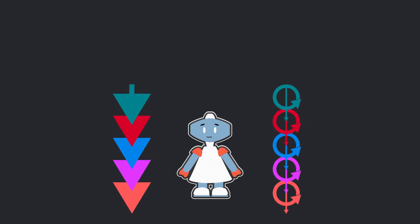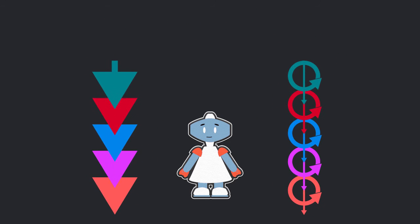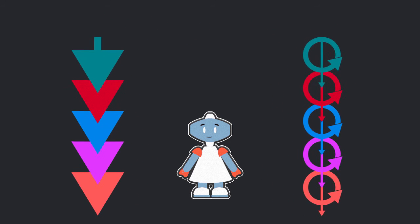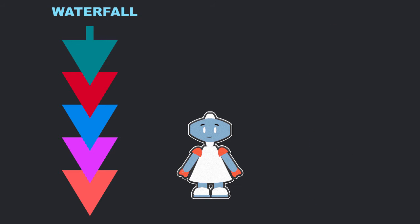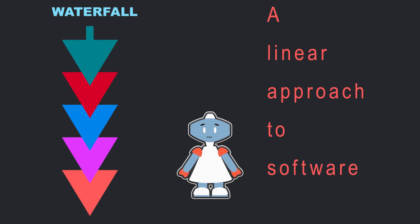In software development, the two most common methodologies are waterfall and agile. Let's take a look at each one. Traditionally, IT project managers use the waterfall methodology, which is a linear approach to software development.